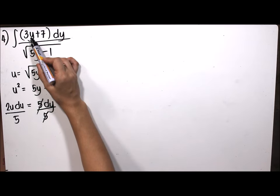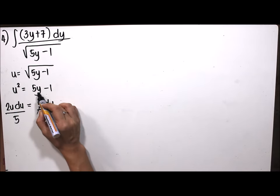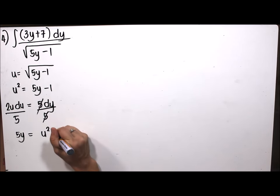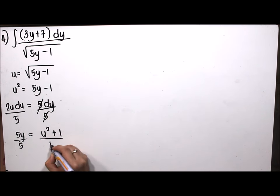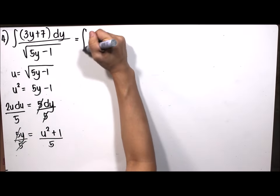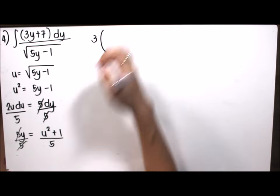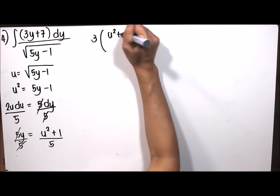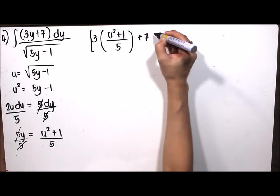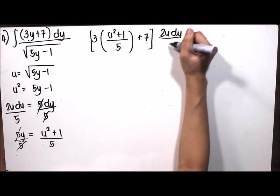We also need y in terms of u. From u squared equals 5y minus 1, we solve: 5y equals u squared plus 1, so y equals u squared plus 1 over 5. Substituting into the integral, 3y plus 7 becomes 3 times (u squared plus 1)/5 plus 7, multiplied by dy which is 2u du over 5, all divided by u.